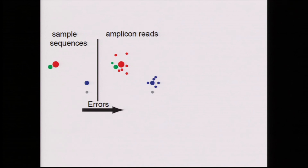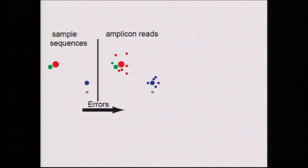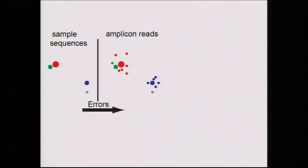Here's what that looks like schematically. This is my sample, and there are four different sequence types; the size of these circles represents how abundant they are. When I do my amplicon sequencing, noise is generated — and this is now my data that I want to analyze. I should note that I've cheated here: I don't actually have colors on this data. This data at this point is all just black; I don't know from which sample these sequencing reads came.